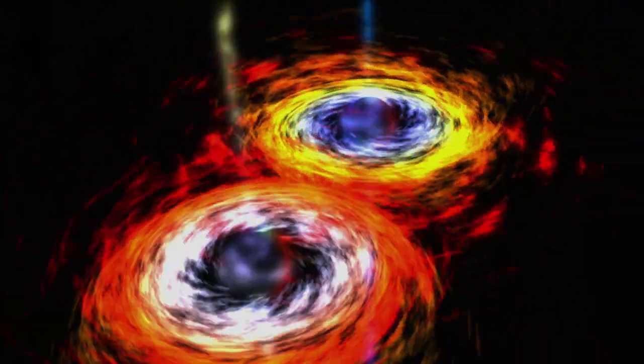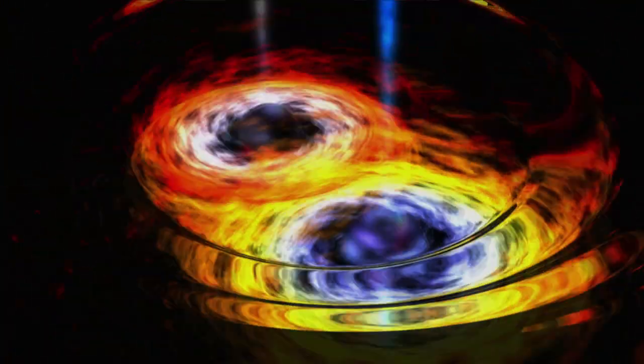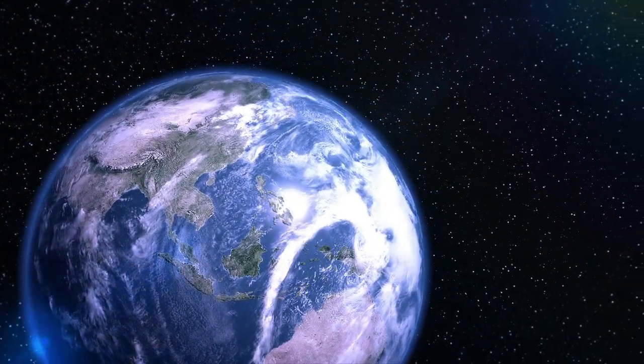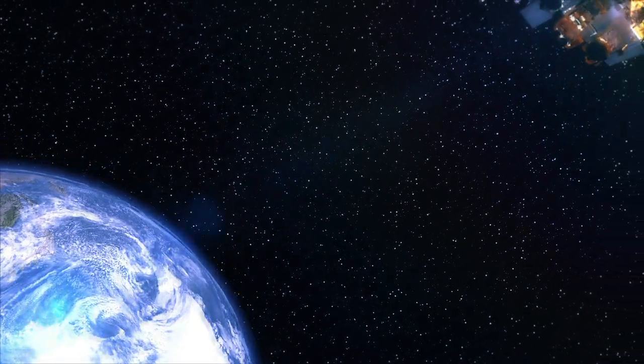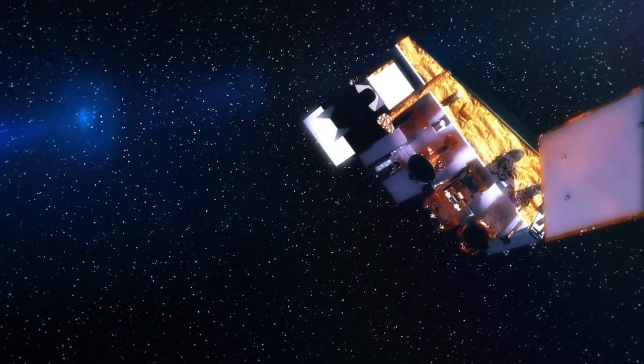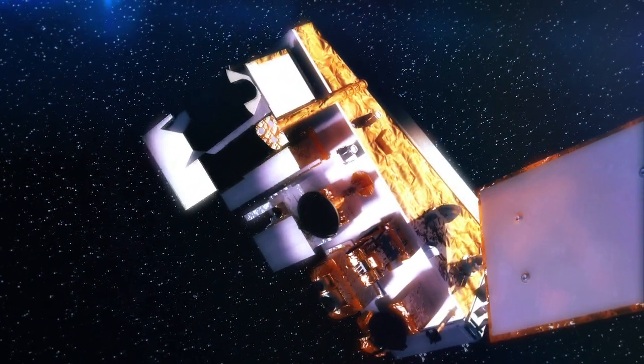Ripples in spacetime caused, for example, by the merger of two black holes. The trick is to actually measure these gravitational ripples, and to do that you need a remarkably precise measuring instrument: an atom interferometer.